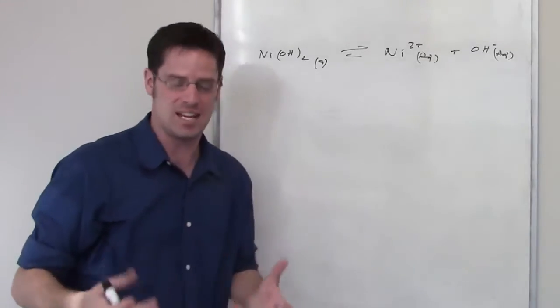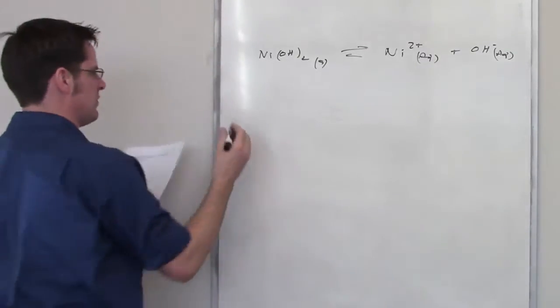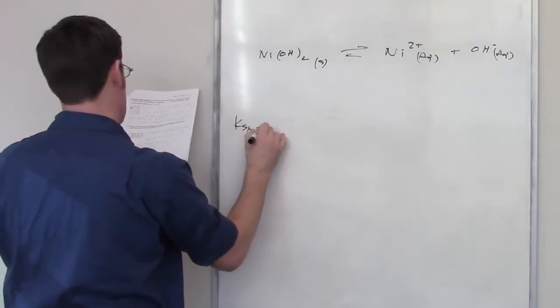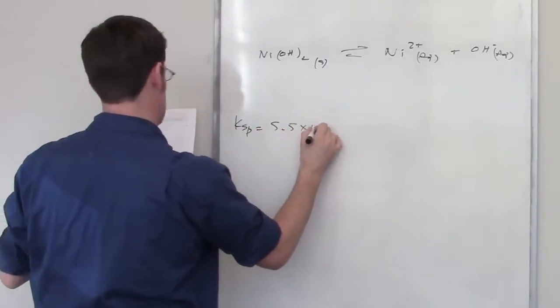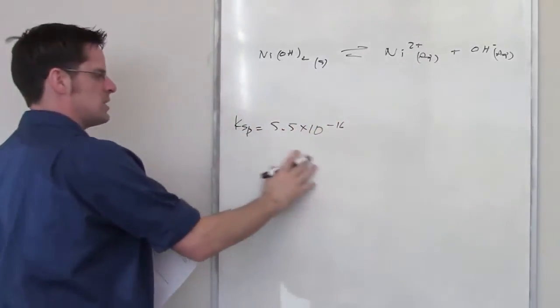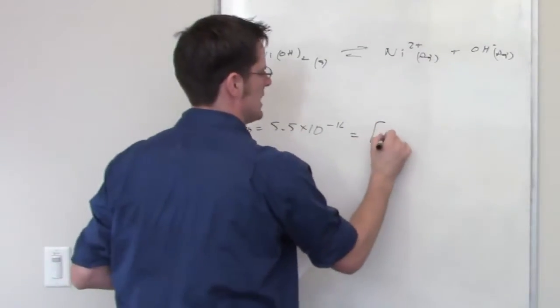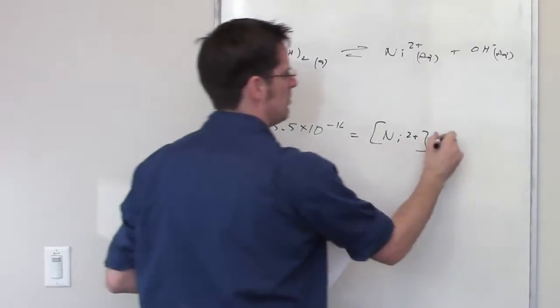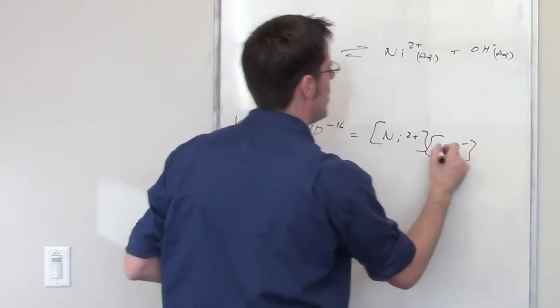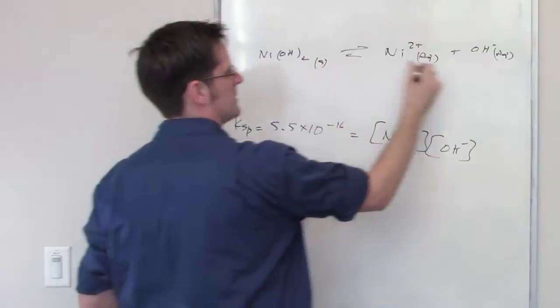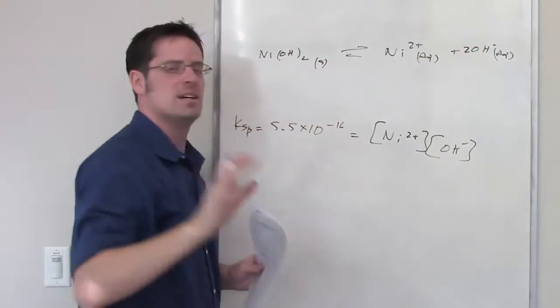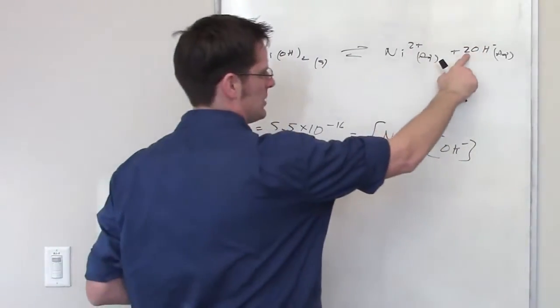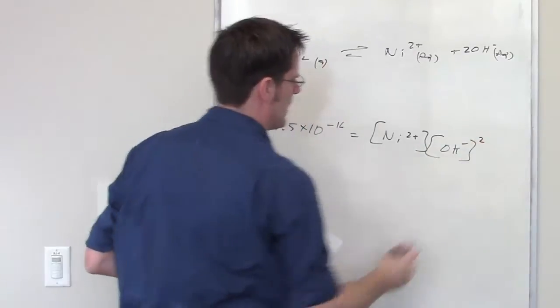So that's really the question that it's asking. It gives me the Ksp for this as being equal to 5.5 times 10 to the negative 16. The Ksp expression is going to be equal, then, to the individual equilibrium concentrations of nickel 2+ multiplied by hydroxide minus, and I just realized that there are two hydroxide molar equivalents here, so I need to put a 2 in front of that. My apologies. That too is a coefficient here. It becomes an exponent right there.